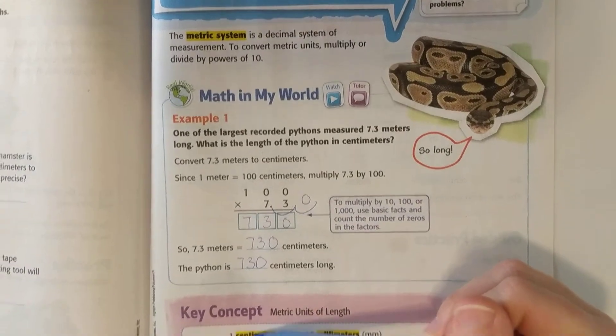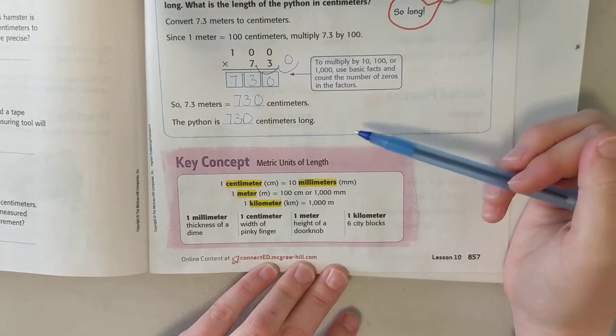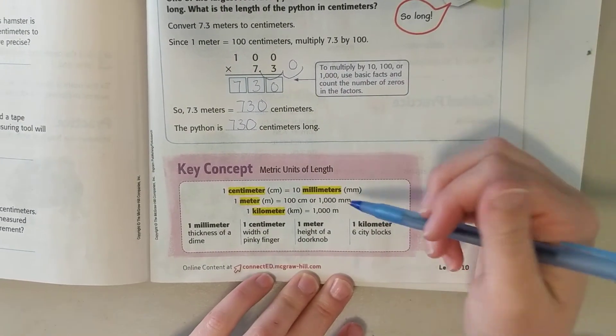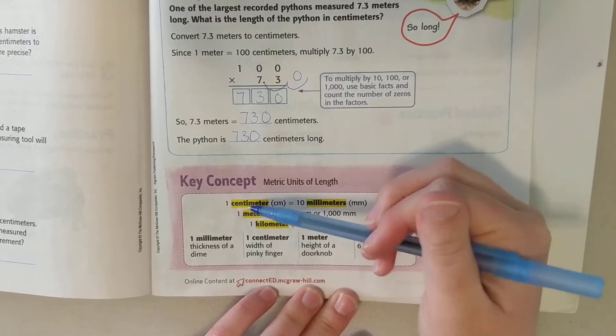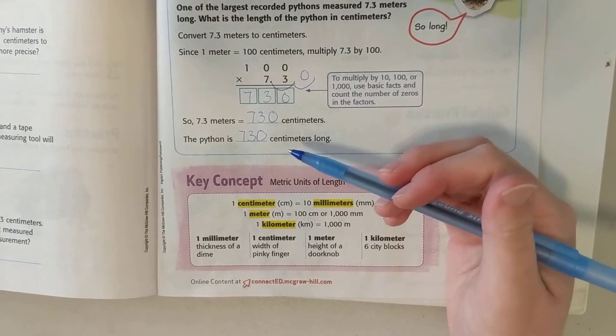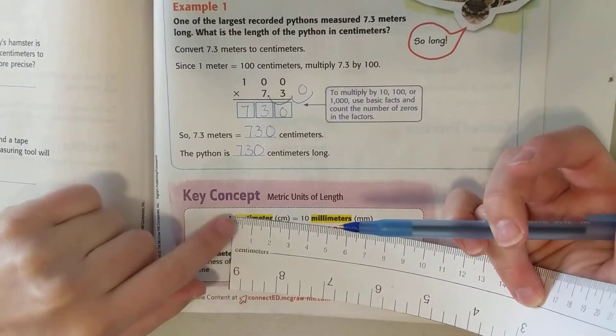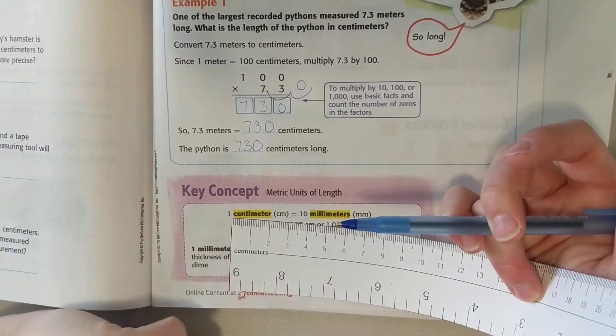A centimeter is 10 millimeters. Millimeter is the smallest unit of measure we'll work with in fifth grade. There are smaller ones, nanometers, picometers, whatnot, but millimeters is our smallest. So 10 of those make a centimeter. You can see that on our ruler that 10 little lines here make one centimeter. So the little lines are millimeters, very thin, about the thickness of a dime.